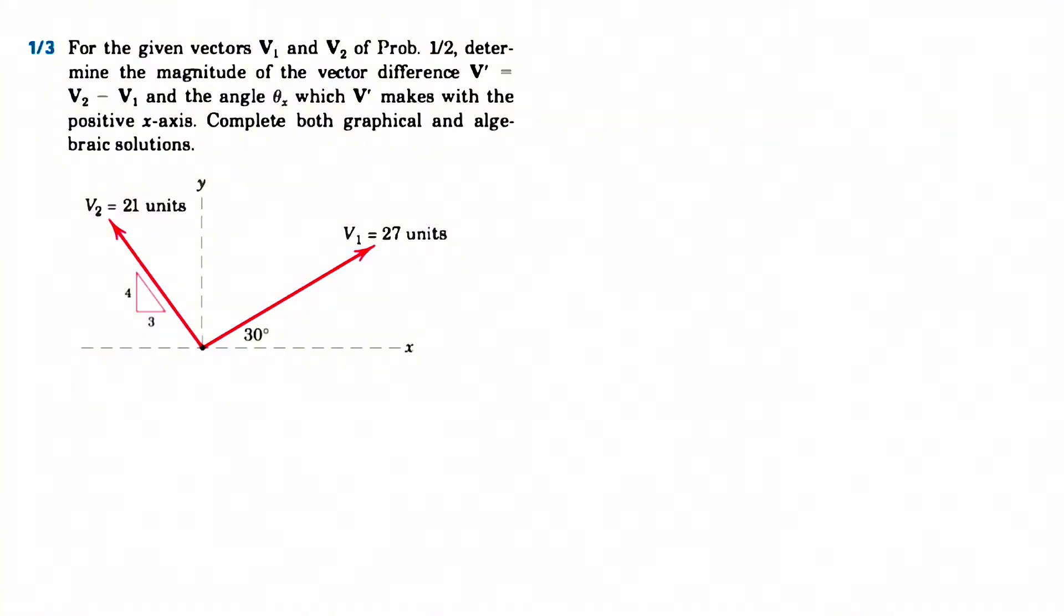So V2 minus V1 and the angle theta x, which V prime is going to make with the positive x axis. And it's asking us to do both graphical and algebraic solution.